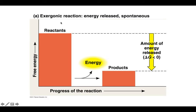Along the y-axis I have free energy, and along the x-axis I have the reaction — time elapsed, or just progress of the reaction. So I start out with my reactants, and you'll notice that they have relatively high free energy. My products, however, have a lower free energy. So I went from high energy reactants to low energy products, and we know that energy can't be created or destroyed, so it had to go somewhere.